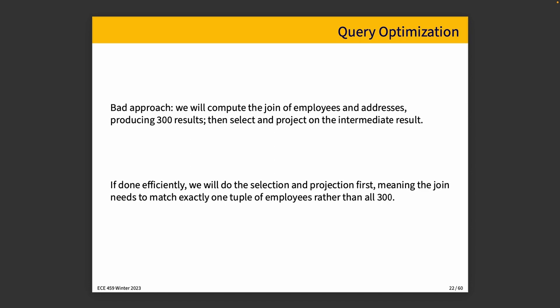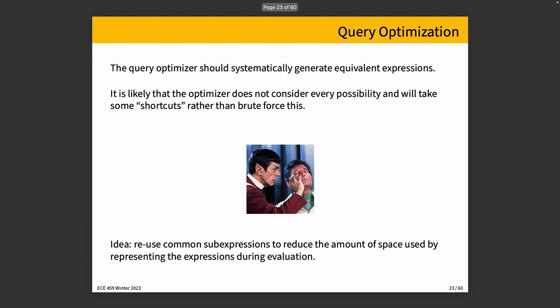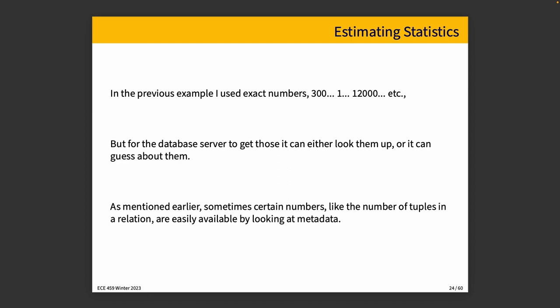The query optimizer should systematically generate equivalent expressions, but since performing all possible transformations and evaluating each option takes non-trivial time, the optimizer likely doesn't consider every single possibility and takes shortcuts rather than doing it by brute force. One idea is that if we can reuse common sub-expressions, we can reduce the space required by representing expressions during evaluation. If we recognize we've seen something like this before, we know what to do and don't have to worry about remembering every permutation.